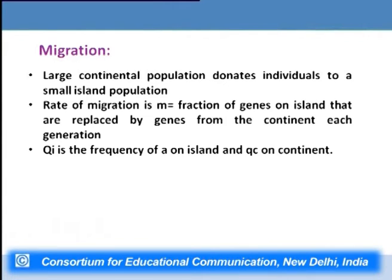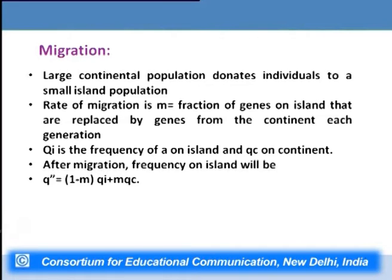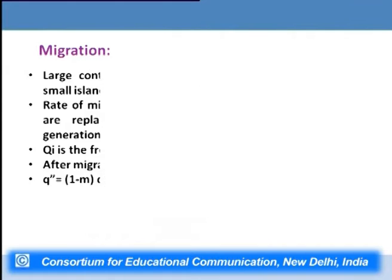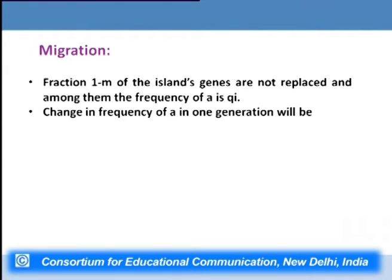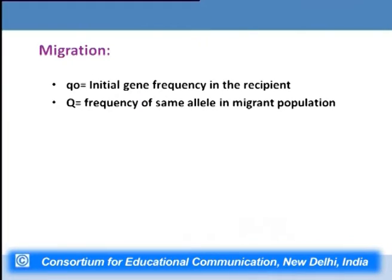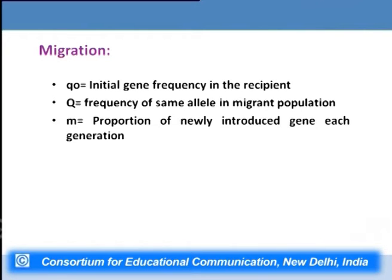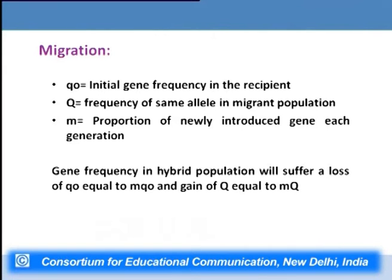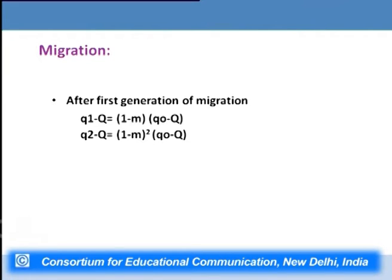If qᵢ is the frequency of allele small a on the island and qc is the frequency on the continent, then after migration the frequency on the island becomes q′ = (1 − m)·qᵢ + m·qc, where m is the migration rate. This is because fraction (1 − m) of island genes are not replaced and among them the frequency of small a is still qᵢ. If q₀ is the initial gene frequency in the recipient and Q is the frequency in the migrant population, the change per generation can be derived accordingly.